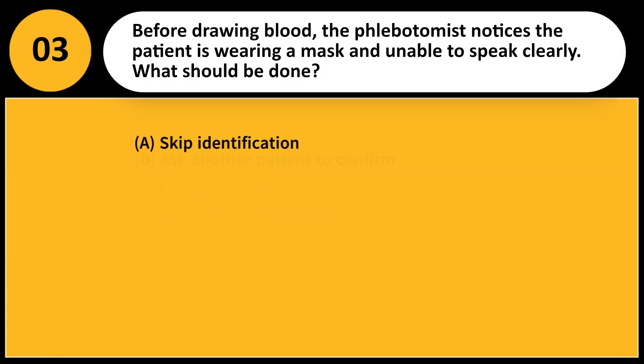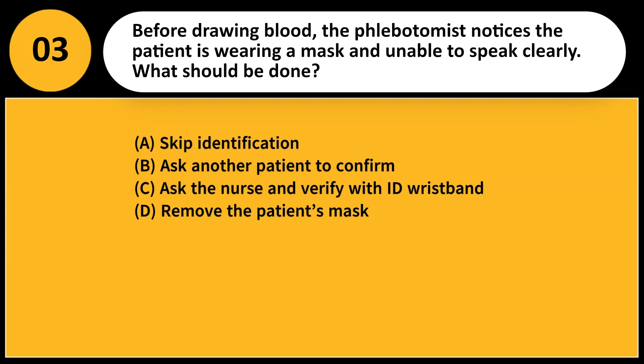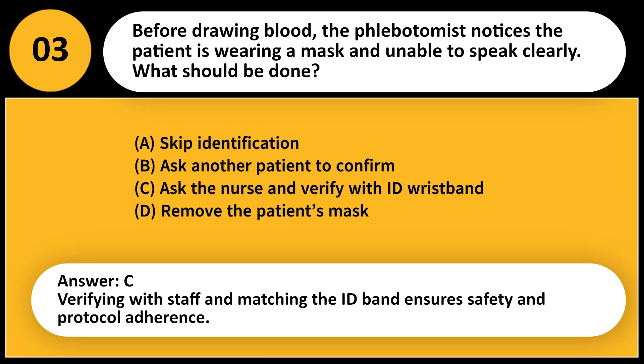Before drawing blood, the phlebotomist notices the patient is wearing a mask and unable to speak clearly. What should be done? A. Skip identification. B. Ask another patient to confirm. C. Ask the nurse and verify with ID wristband. D. Remove the patient's mask. Answer: C. Verifying with staff and matching the ID band ensures safety and protocol adherence.